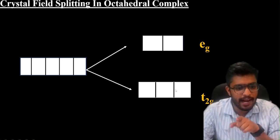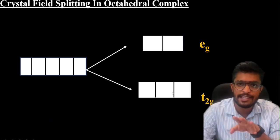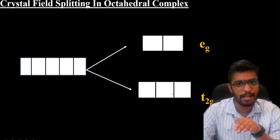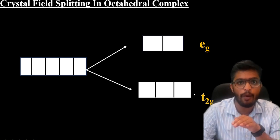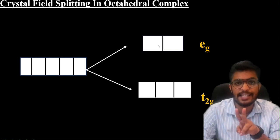T2G has three orbitals with the same energy - we call them degenerate orbitals. EG has two degenerate orbitals.